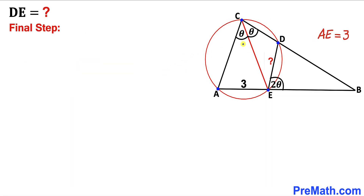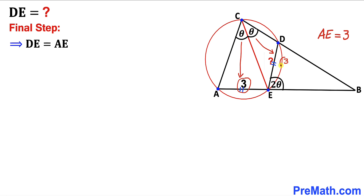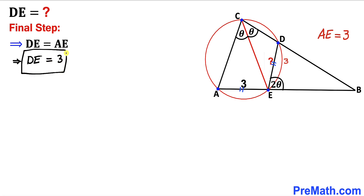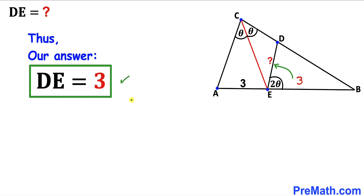For our final step: we know that angles ACE and DCE are congruent, so their corresponding chords are congruent as well. That means side length DE equals side length AE. Since AE is 3 units, DE must be 3 units as well. Therefore, our distance DE equals 3 units.